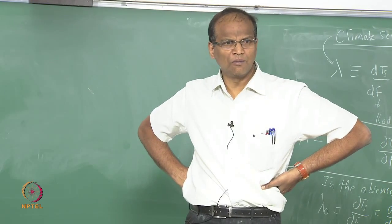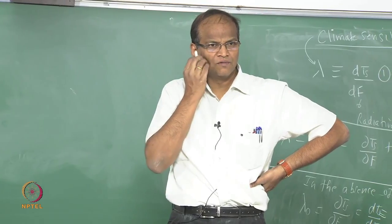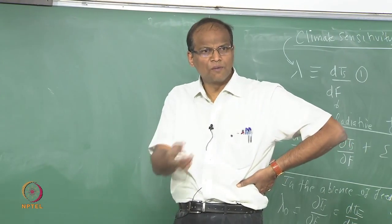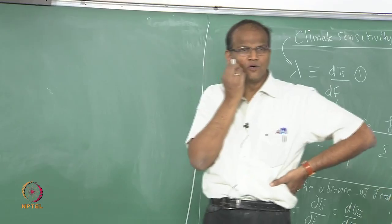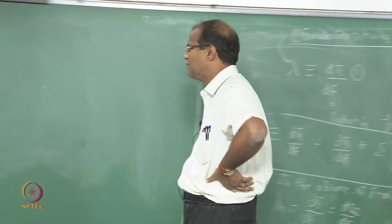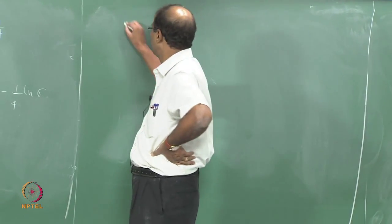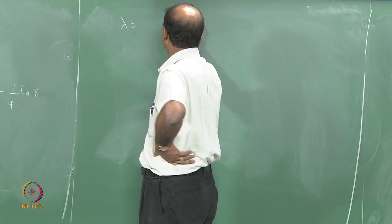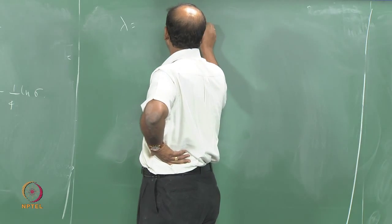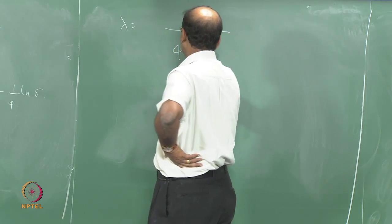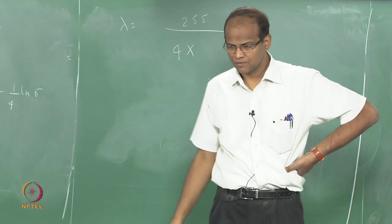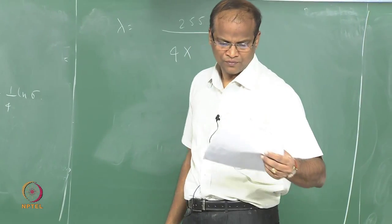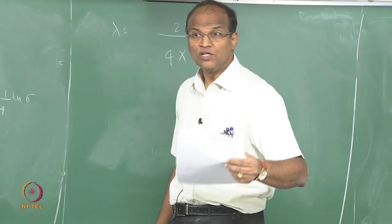The equivalent black body temperature of the earth — we are already working out problems with that. That previous problem also used 239. What is lambda now? T_e = 255 K; F_s = 239.4 watts per meter square.